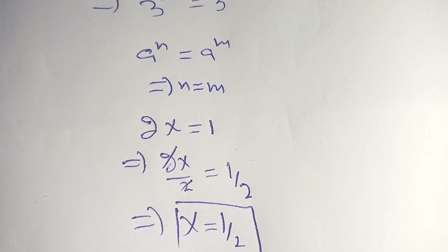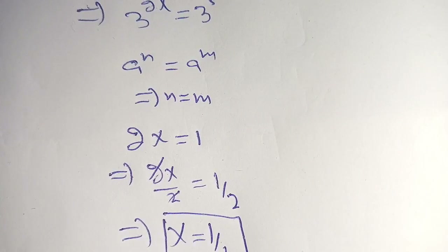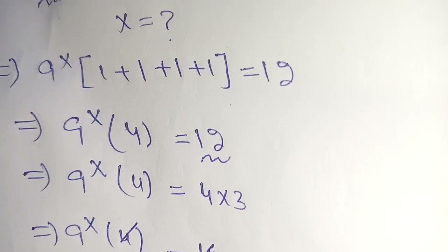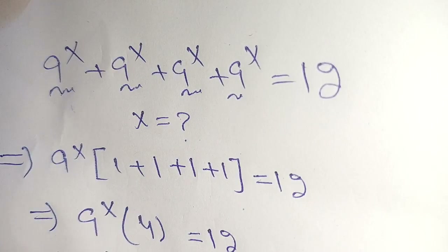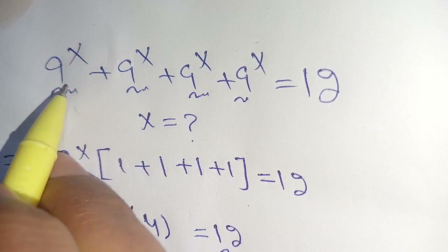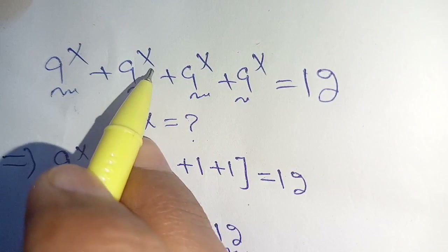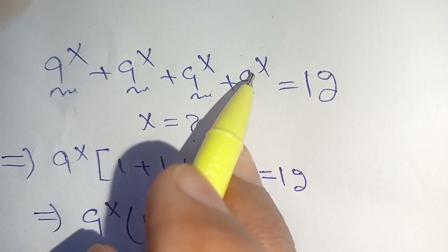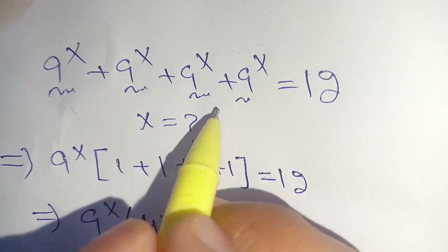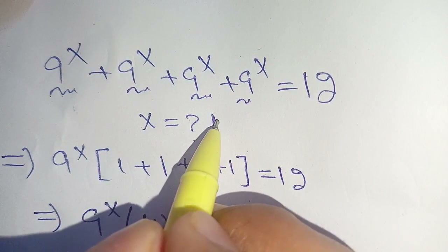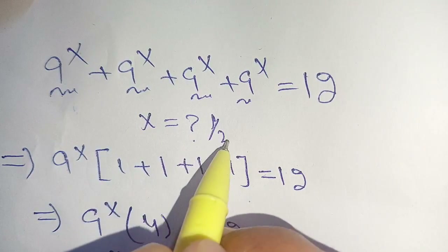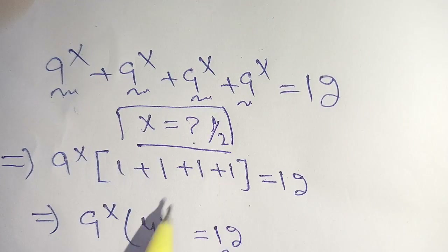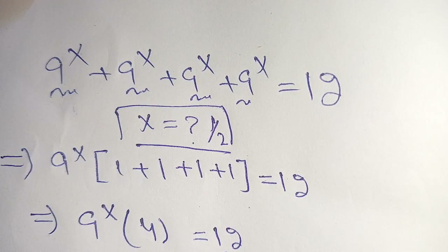The value of x is equal to 1/2, which satisfies our equation 9 to the power x plus 9 to the power x plus 9 to the power x plus 9 to the power x equals 12. If you're new here, make sure you subscribe to our channel for more informative videos. See you in the next video, till then bye.